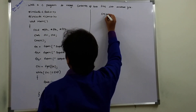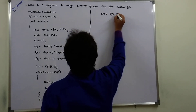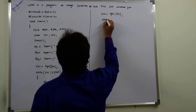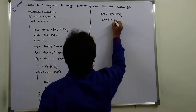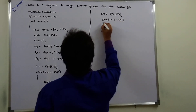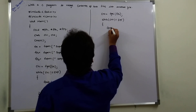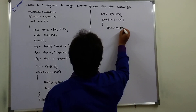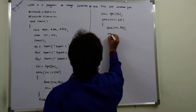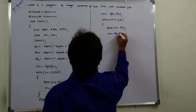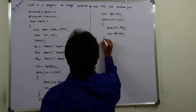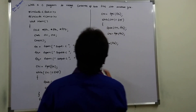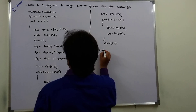ch2 is equal to fgetc of fp2. While ch2 is not equal to EOF, fputc of ch2 comma fp3, then ch2 is equal to fgetc of fp2. Then fclose of fp2 and fclose of fp3.